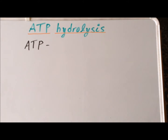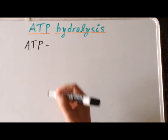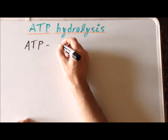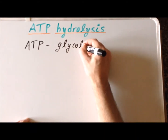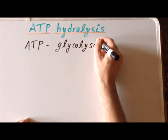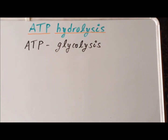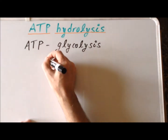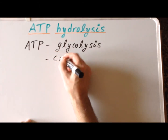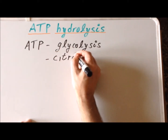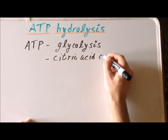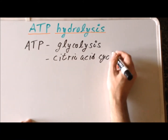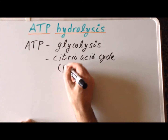Two of the important sources of ATP are: first, glycolysis — the breakdown of sugars, particularly glucose — and second, the citric acid cycle, which is often known as the Krebs cycle, which forms even more ATP.